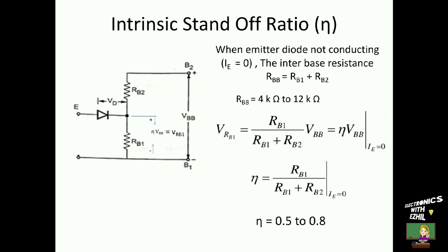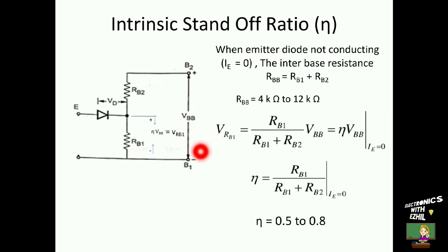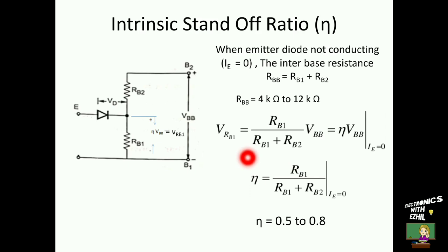Next, we will define the intrinsic standoff ratio of the UJT. When the emitter diode is not conducting, the resistance between base 1 and base 2 is called the interbase resistance, denoted by RBB, which is equal to RB1 plus RB2. The value of RBB ranges between 4 kΩ to 12 kΩ. Now, we connect supply VBB between base 2 and base 1. The voltage across RB1 is calculated using the potential divider rule: VRB1 = VBB × RB1 / (RB1 + RB2). The ratio RB1/(RB1+RB2) is defined as the intrinsic standoff ratio, denoted by eta (η), so VRB1 = η·VBB when the emitter is open-circuited. The typical value of eta must lie between 0.5 to 0.8.